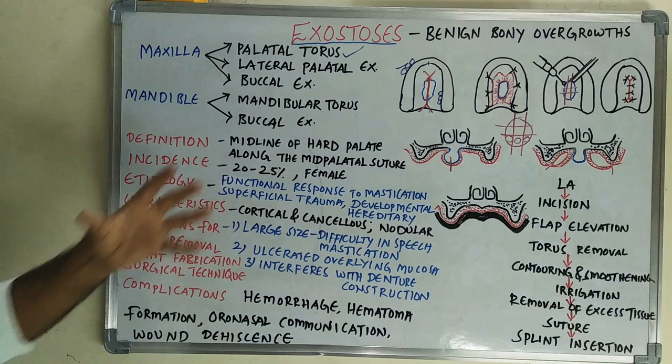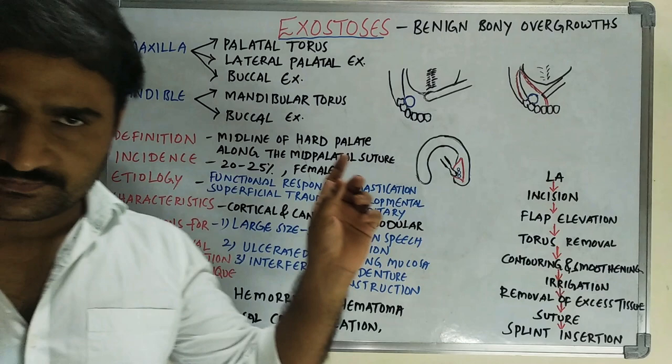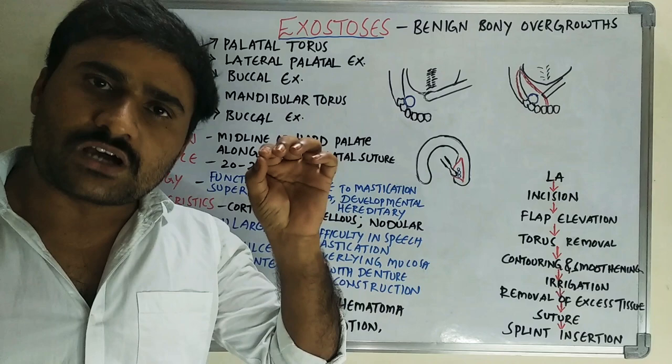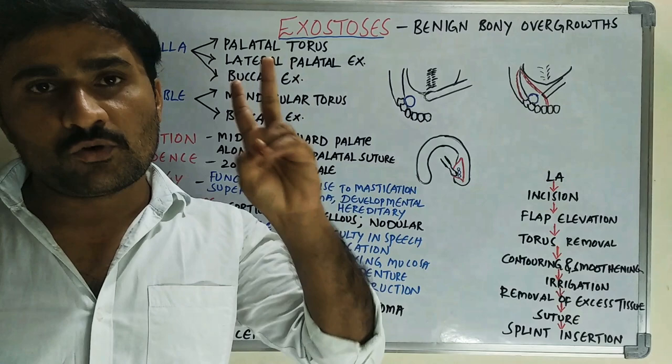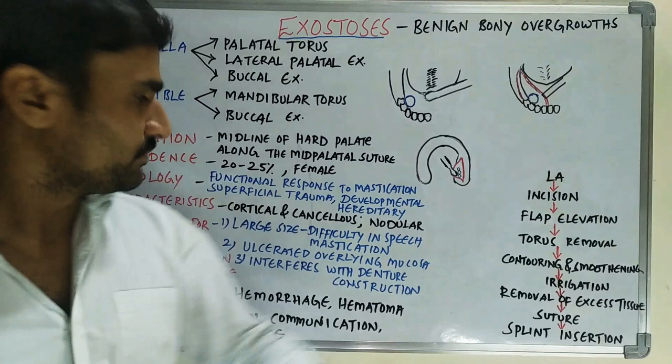Now we will discuss mandibular torus. By definition, it occurs on the lingual aspect of the alveolar process in the mandibular premolar region, above the mylohyoid line. These two features — mandibular premolar region and above the mylohyoid line — are the most important points. The incidence is 5 to 10 percent.